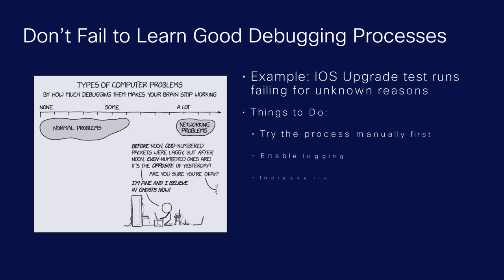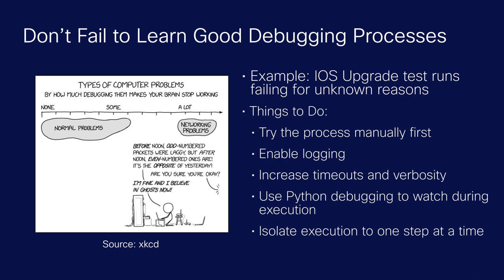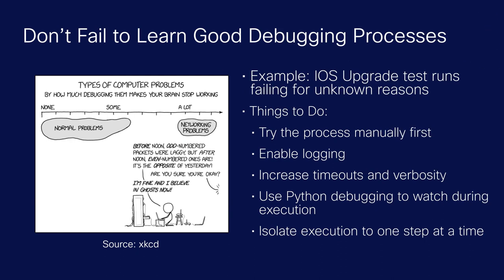Don't fail to learn good debugging processes. Debugging has multiple different components — you could be debugging your automated software, your Python script, your Ansible playbook, or whatever you're working with. Debugging happens at several layers: you need to debug the network device itself, the points of configuration, and also the software development lifecycle. If you don't establish good debugging processes early on, it's going to be harder down the road to establish that within your team.